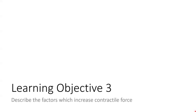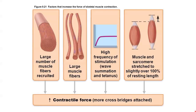Now that we know how a muscle contracts, our next learning objective is to describe the factors which increase contractile force — that is, how strongly or how much force or tension is generated when a muscle contracts. Each of these factors boils down to how many cross bridges are formed, meaning how many myosin heads bind to actin. The more cross bridges formed, the greater the contractile force produced.